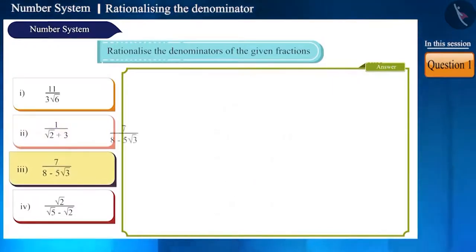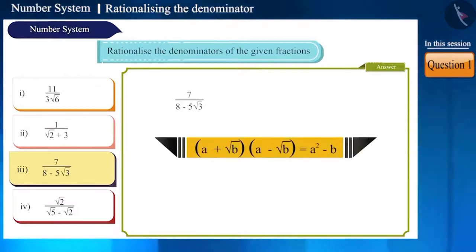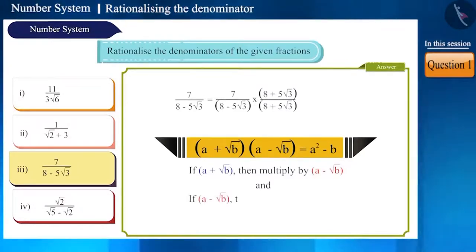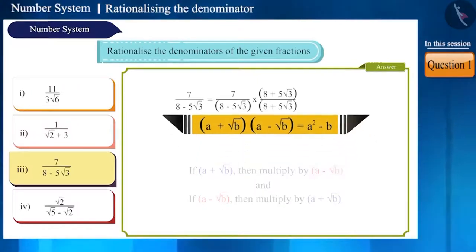Now, let's move to the next question: 7 by 8 minus 5 root 3. Even though this question may be different from the previous question, here also we will use the same identity and multiply the numerator and denominator by 8 plus 5 root 3. We have to take care that if the denominator is in the form of a plus root b, then we have to multiply by a minus root b.